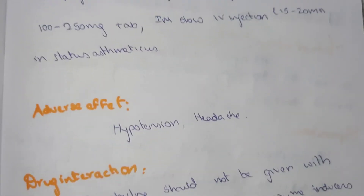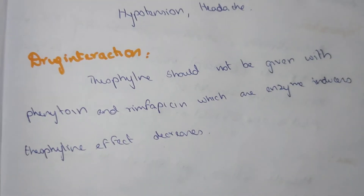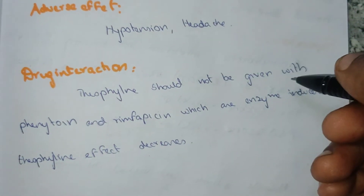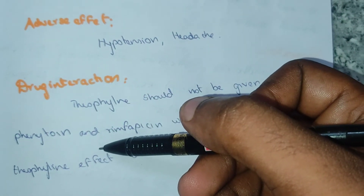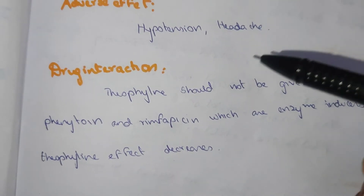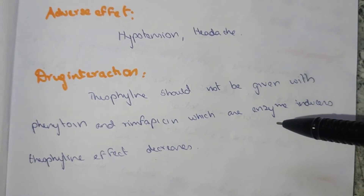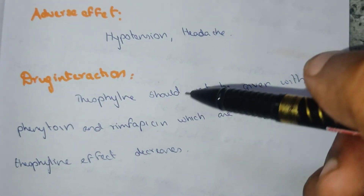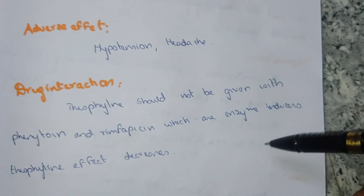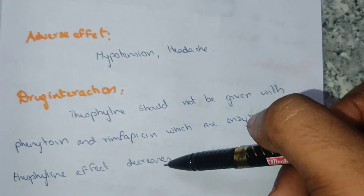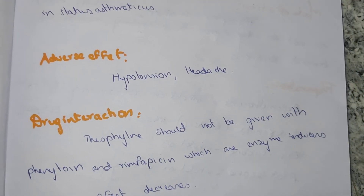The adverse effects of theophylline include hypotension and headache. Regarding drug interactions, theophylline should not be given with phenytoin, which is an anti-epileptic drug, or rifamycin, which is an enzyme inducer. Phenytoin and rifamycin are enzyme inducers that decrease the effect of theophylline.